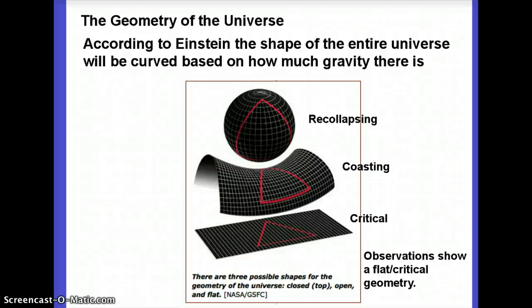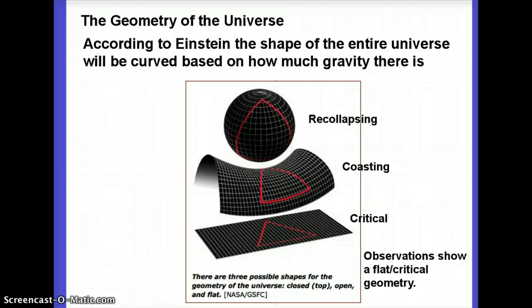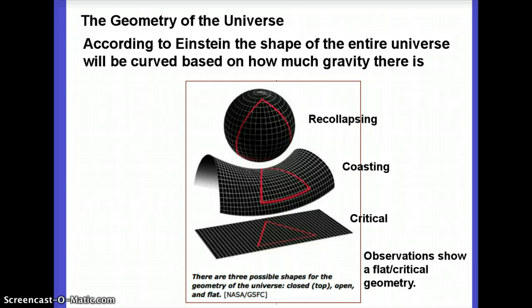In this lecture, I'm going to talk about the geometry of the universe. This is another way to think about the density of the universe — figuring out the density is the question we're constantly trying to answer if we want to know what the fate of the universe is. One way we can get an answer is to find the mass, like I said in the last lecture.